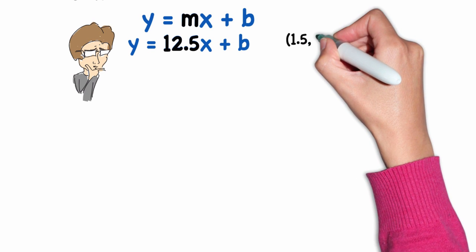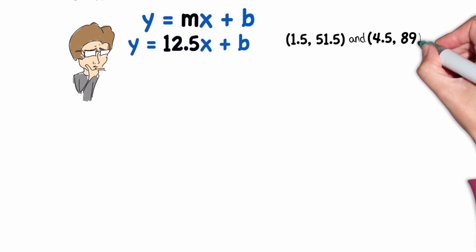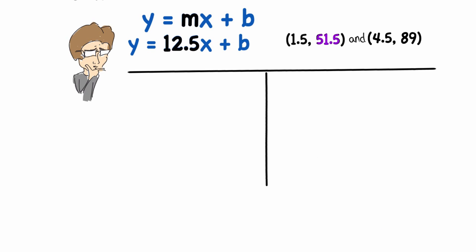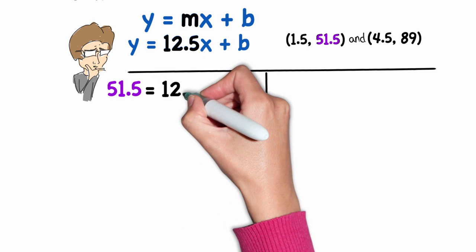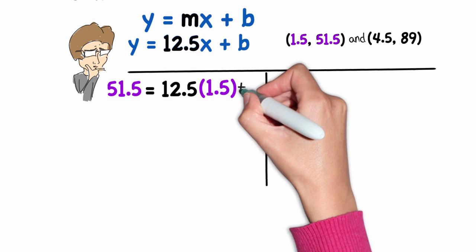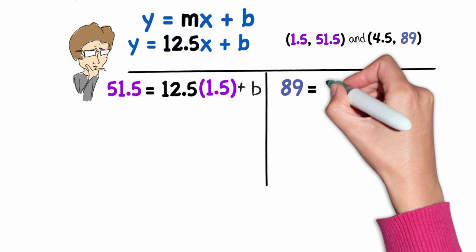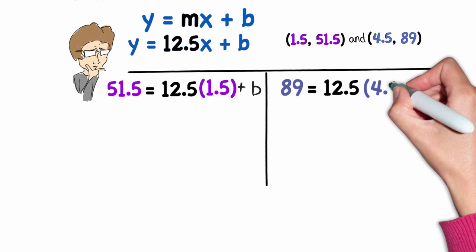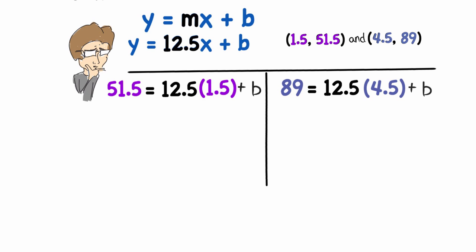So to find the y-intercept without graphing the points, what I'm going to do is take one of our data pairs and substitute it in for the x and y. That way we can solve for b. I'm actually going to do both sets of points at the same time, so that way you can see it doesn't matter which points I choose. They would both be points that are found on the line that was formed.